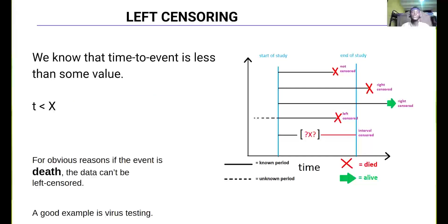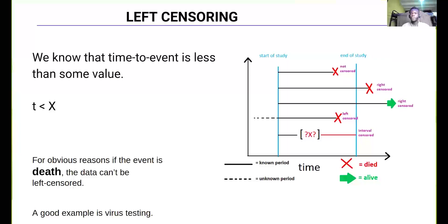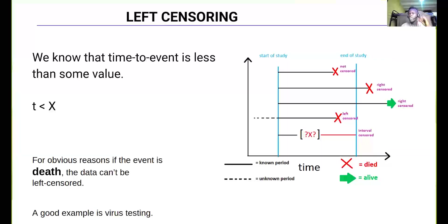Left censoring is when we know that the time to event is less than some value, but we don't know the actual time. A good example is virus testing. Let's say we are testing a particular patient for COVID-19: we test the person in January and the person does not have COVID, then we test them in September and discover the person has COVID. We don't know the exact time the person got COVID — we only know it was less than a particular value, but we don't know the exact time. For obvious reasons, if the event is death, the data cannot be left censored.